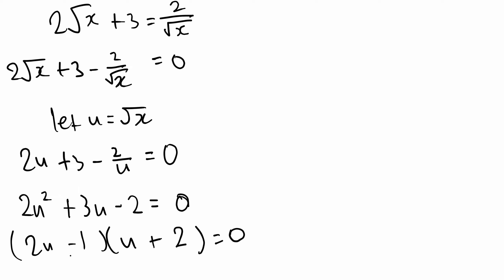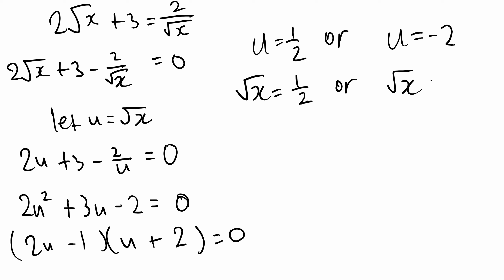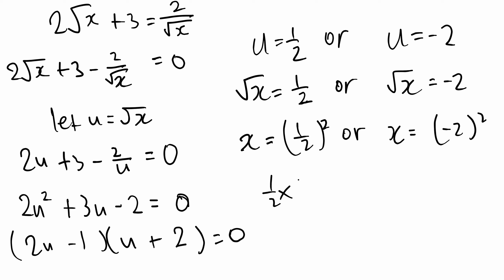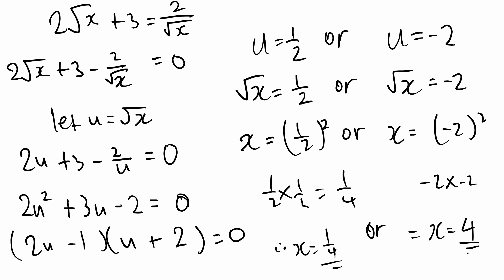We find the value of u that gives 0 in each bracket. For the first bracket, 2u minus 1 equals 0, so u equals a half. For the second bracket, u plus 2 equals 0, so u equals negative 2. What did u represent? Root x. So root x equals a half, or root x equals negative 2. Squaring both sides: x equals (1/2) squared, which is 1 over 4; or x equals (negative 2) squared, which is 4. So our final answers are x equals 1 over 4, or x equals 4.